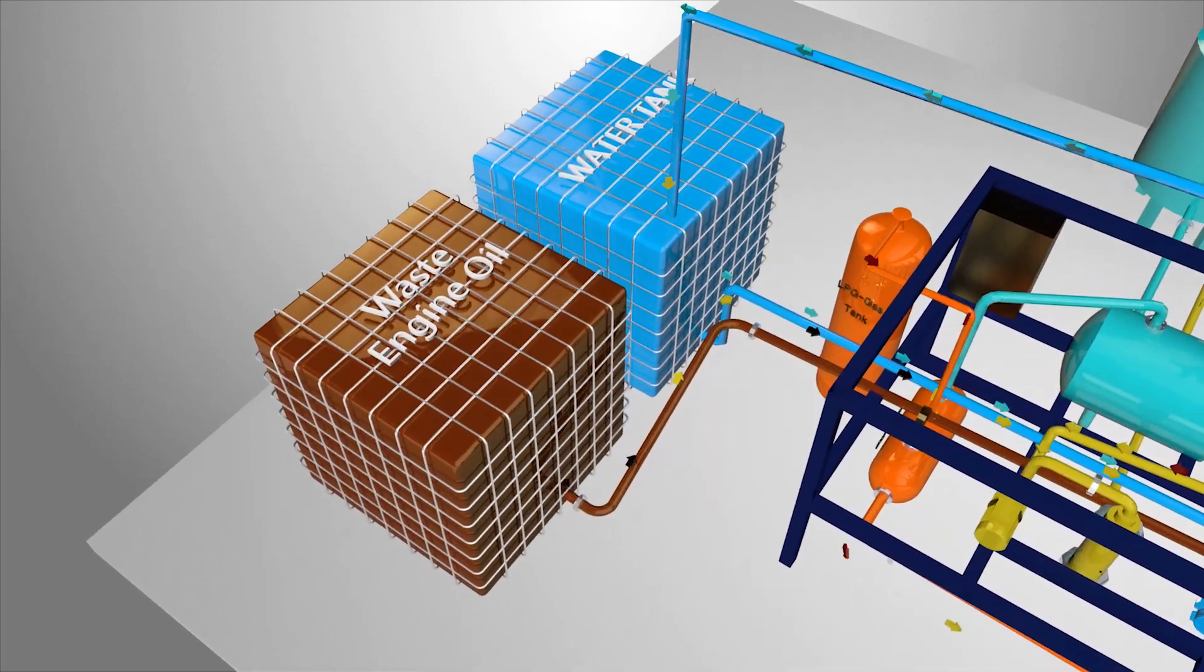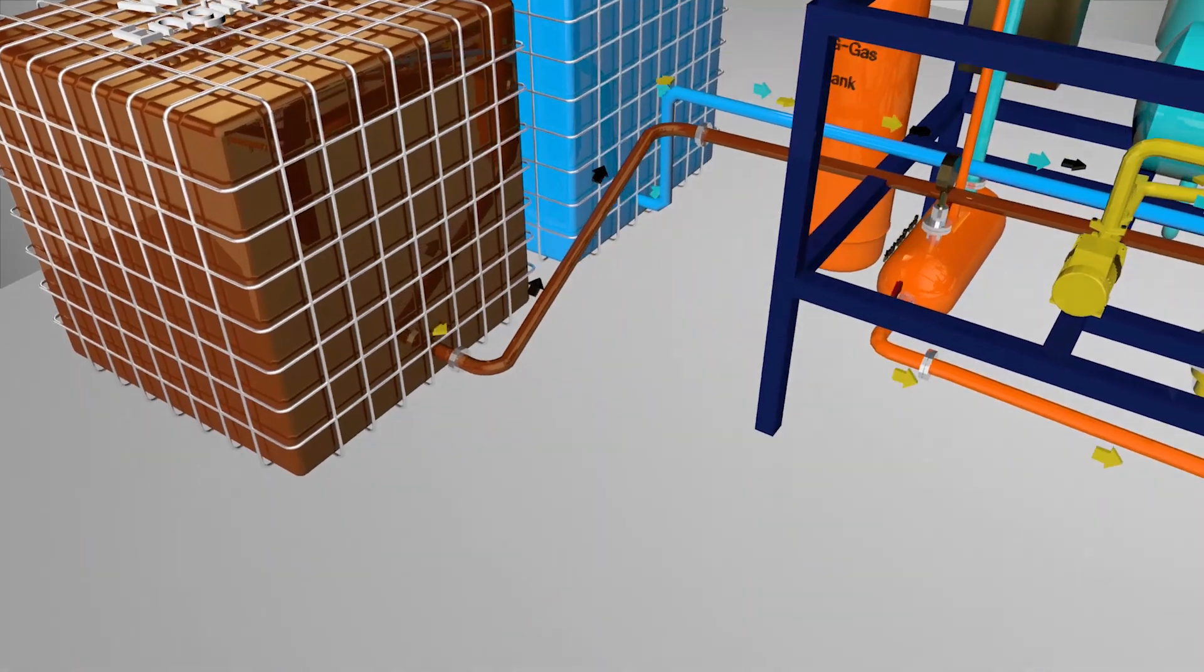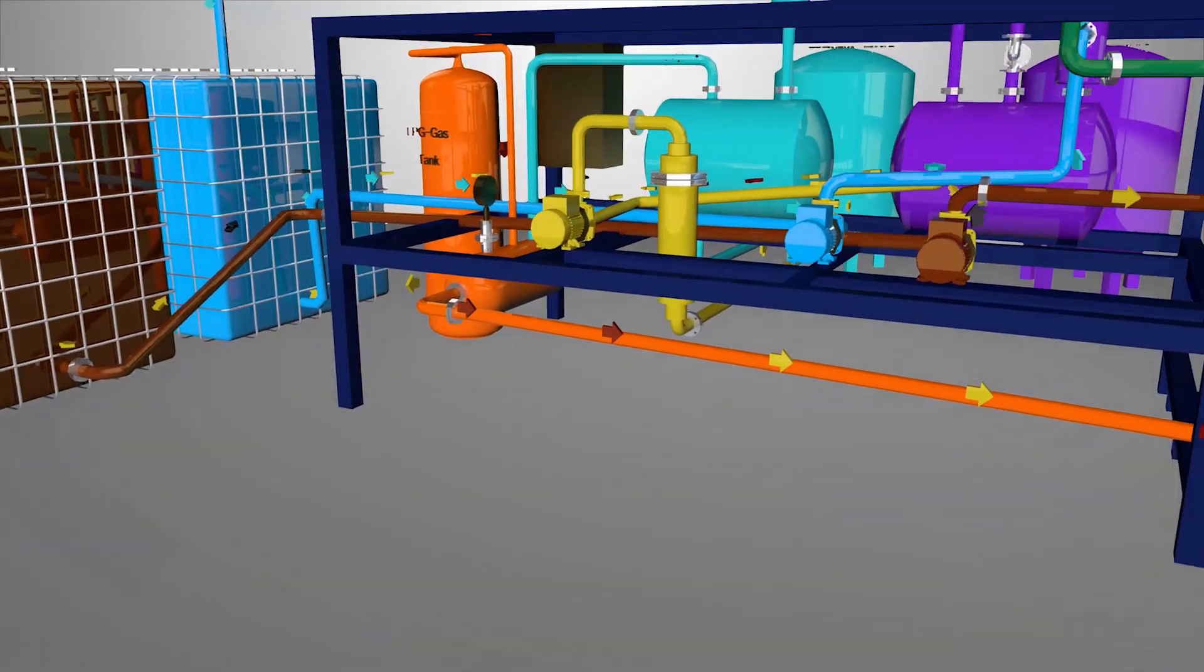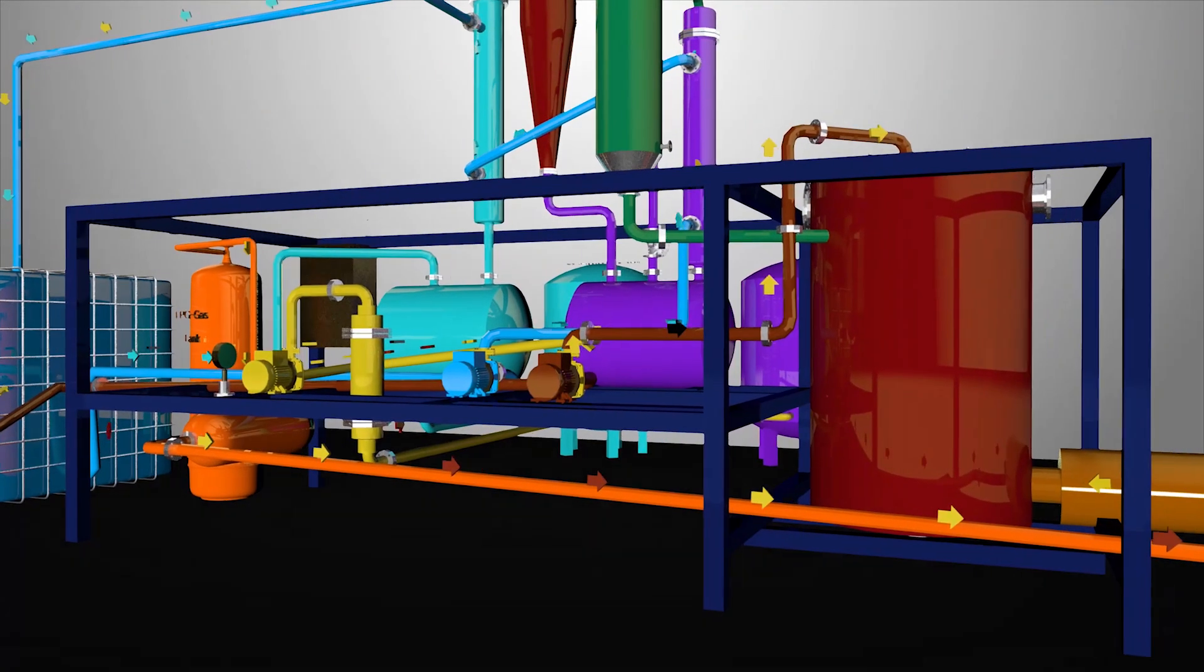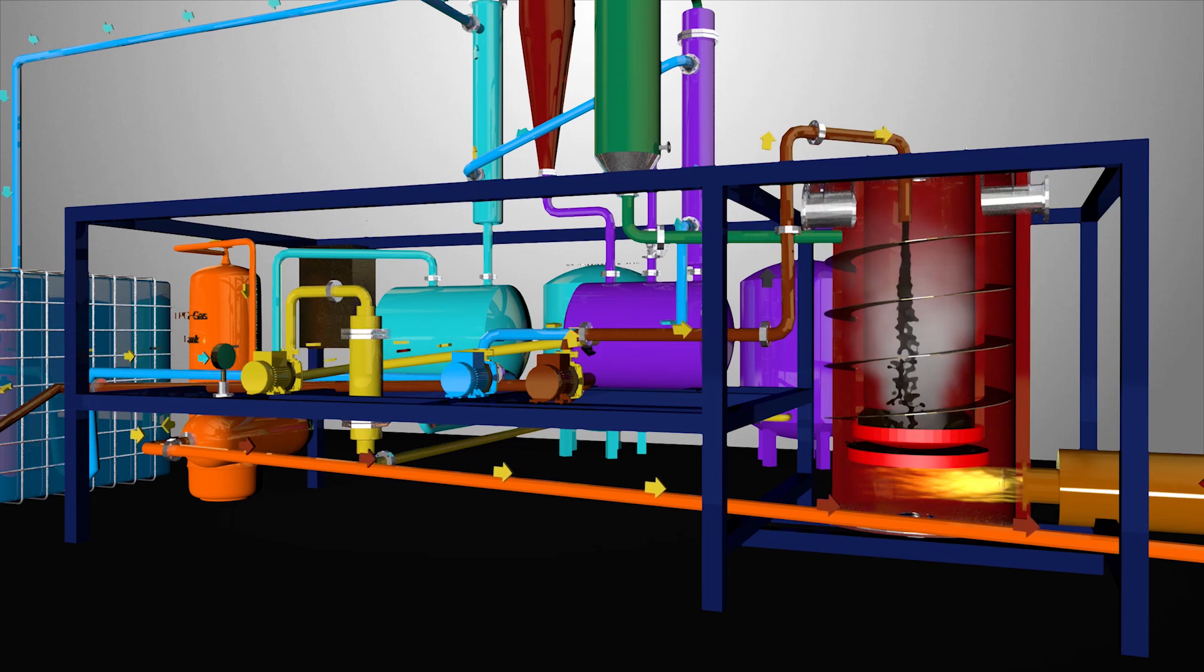First, waste motor oil is pumped from the storage tank into the pyrolysis reactor. The pyrolysis reactor is heated up to around 400 degrees Celsius. This ensures that all the waste motor oil is vaporized effectively.